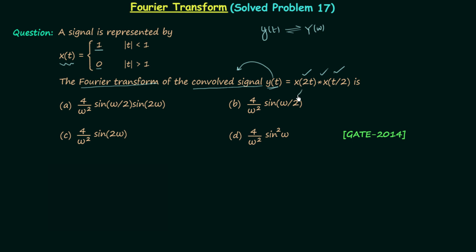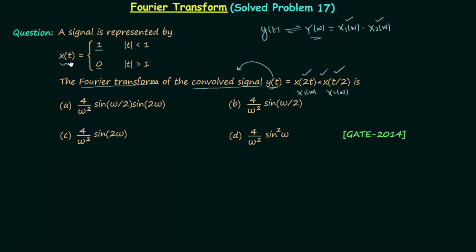So if X1(ω) is the Fourier transform of x(2t) and X2(ω) is the Fourier transform of x(t/2), then Y(ω) = X1(ω) · X2(ω). Our task is to calculate Y(ω), which requires calculating X1(ω) and X2(ω), and we can do that easily if we know the Fourier transform of x(t).